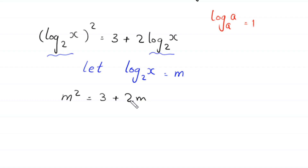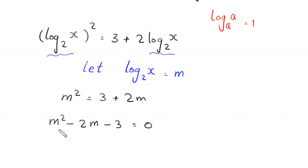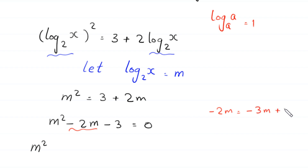We move 3 plus 2m to the left-hand side, giving us m squared minus 2m minus 3 equals 0. This is a quadratic equation and is factorable. We solve it by factorization: we split negative 2m as negative 3m plus m, so this becomes m squared minus 3m plus m minus 3 equals 0.